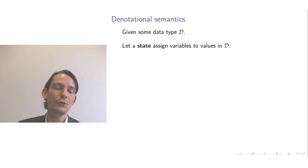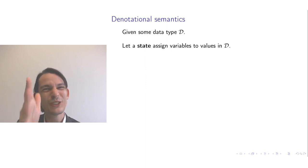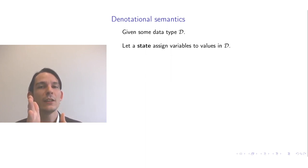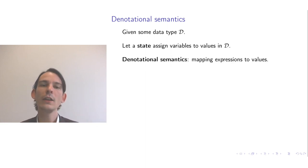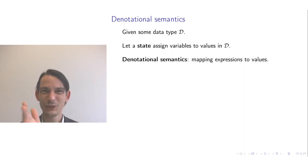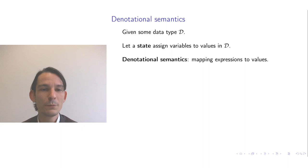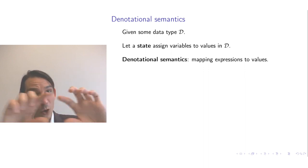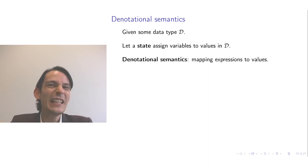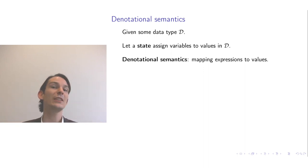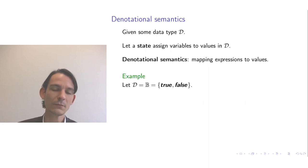In denotational semantics, variables are assigned particular values in a data type. At each instant, the state of the machine assigns to particular variables some value in a data type. If we know the values of the variables in an expression, we can try to evaluate the whole expression by building up its value piece by piece. Ultimately, the whole expression — where the variables are the leaves of the abstract syntax tree — is assigned a value, and that is the intended value of the expression.